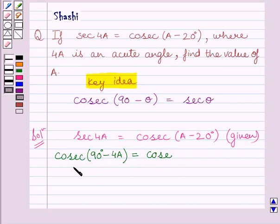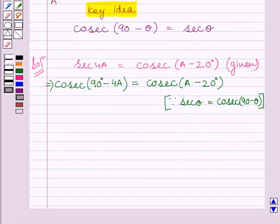Now, cosec 90 degrees minus 4A equals cosec A minus 20 degrees. We know cosec 90 degrees minus 4A equals cosec A minus 20 degrees only when the value of these two angles is equal to each other. So, this implies 90 degrees minus 4A equals A minus 20 degrees.